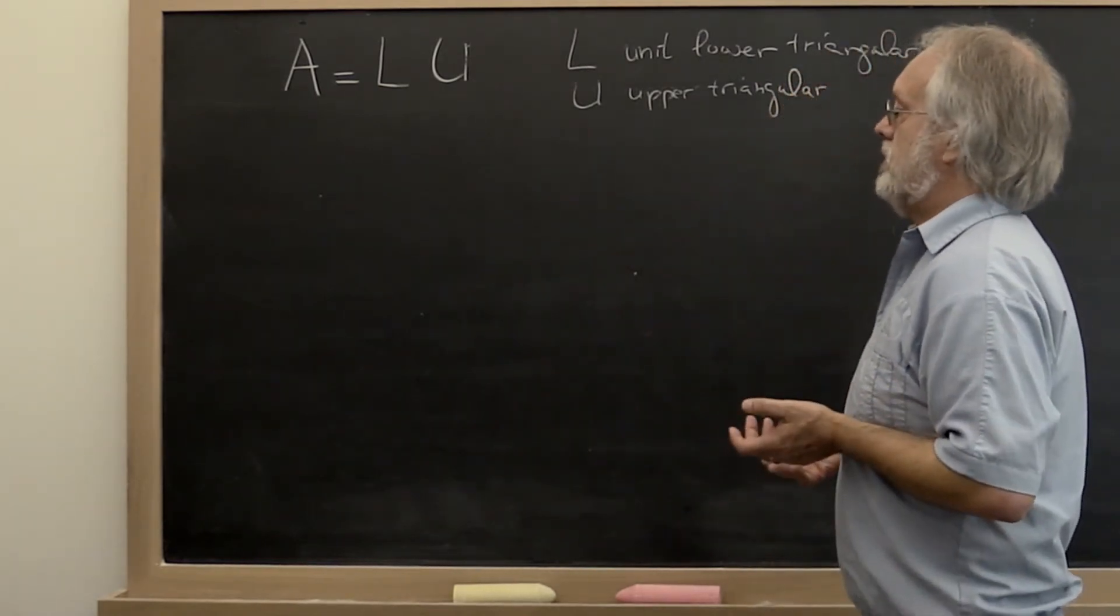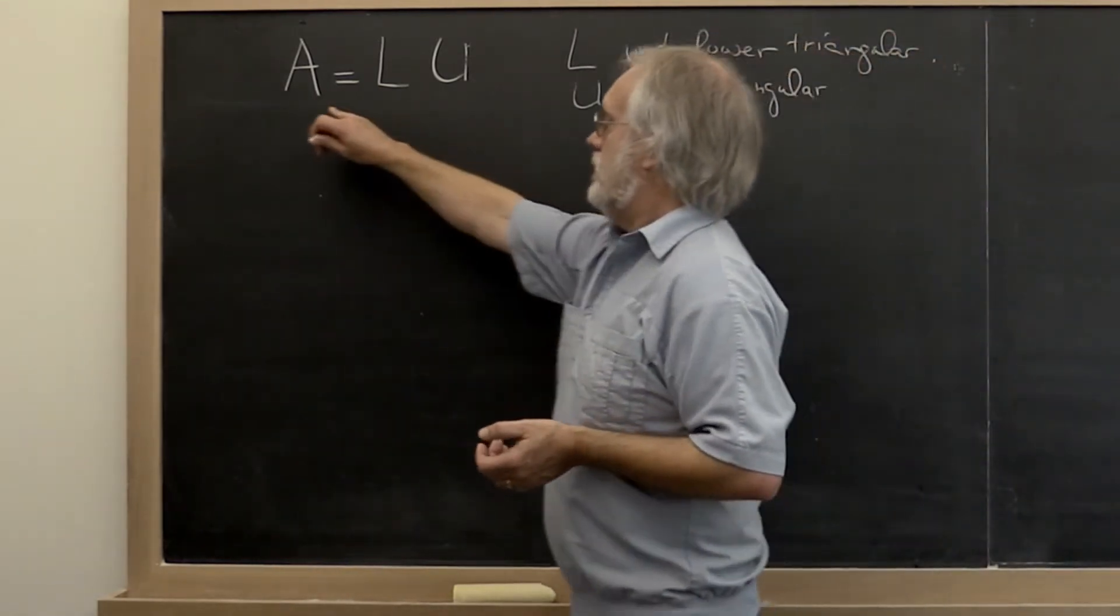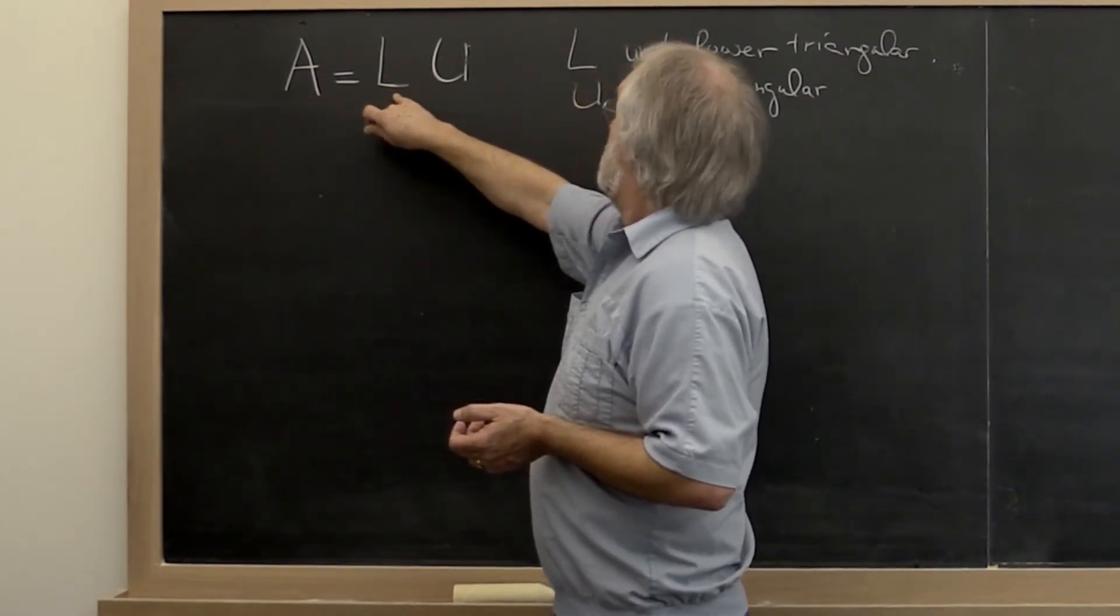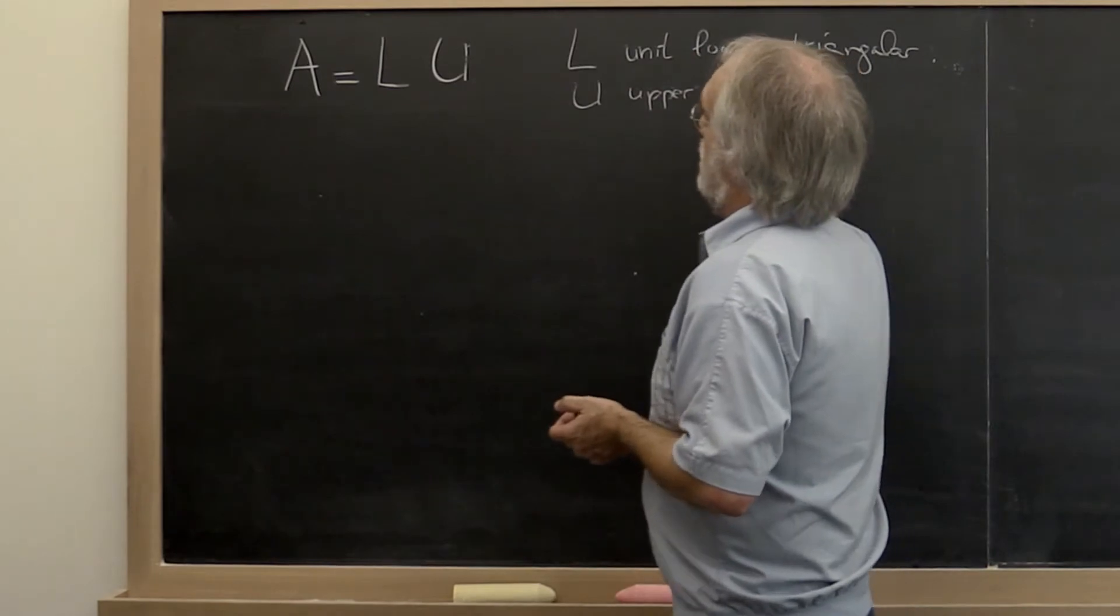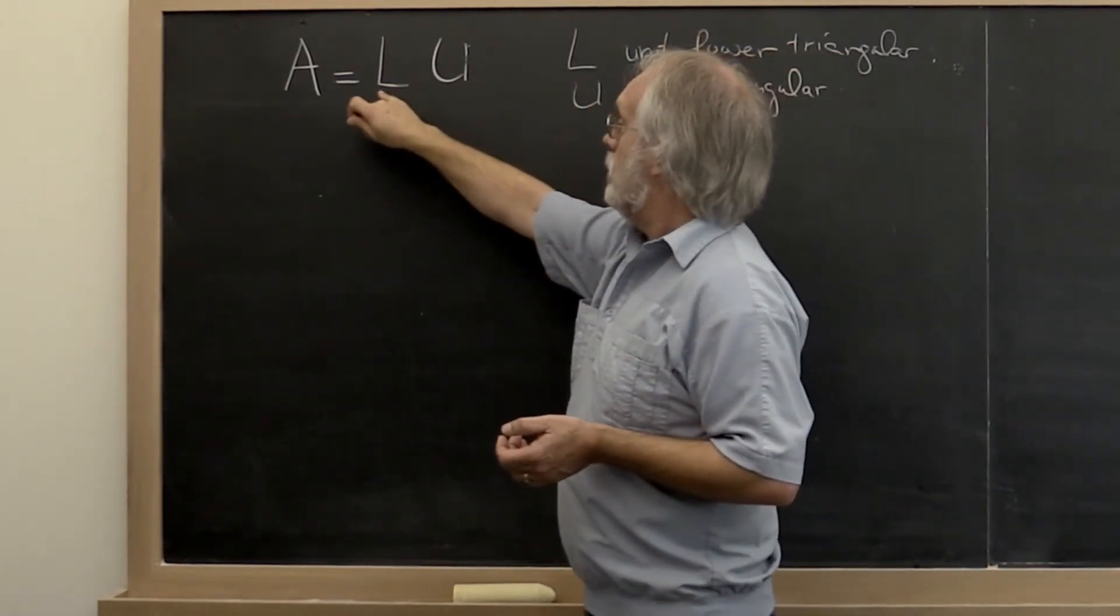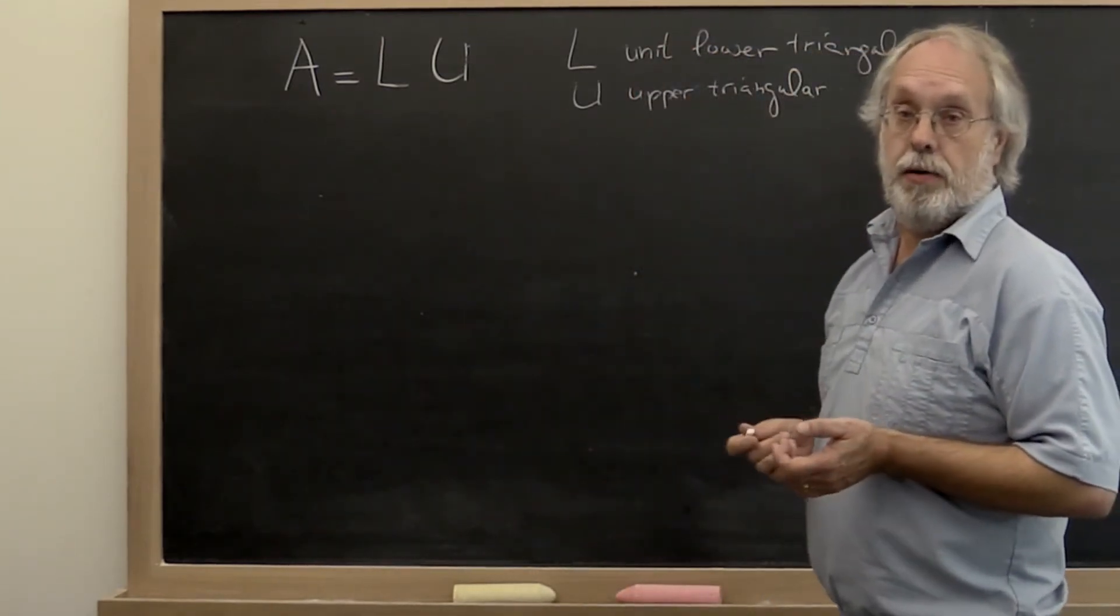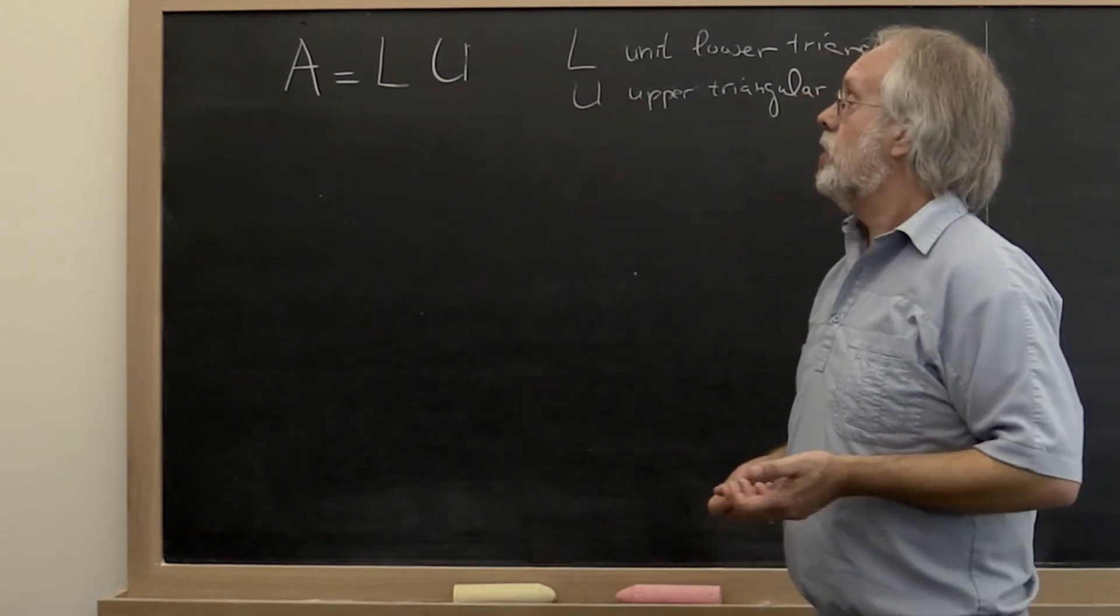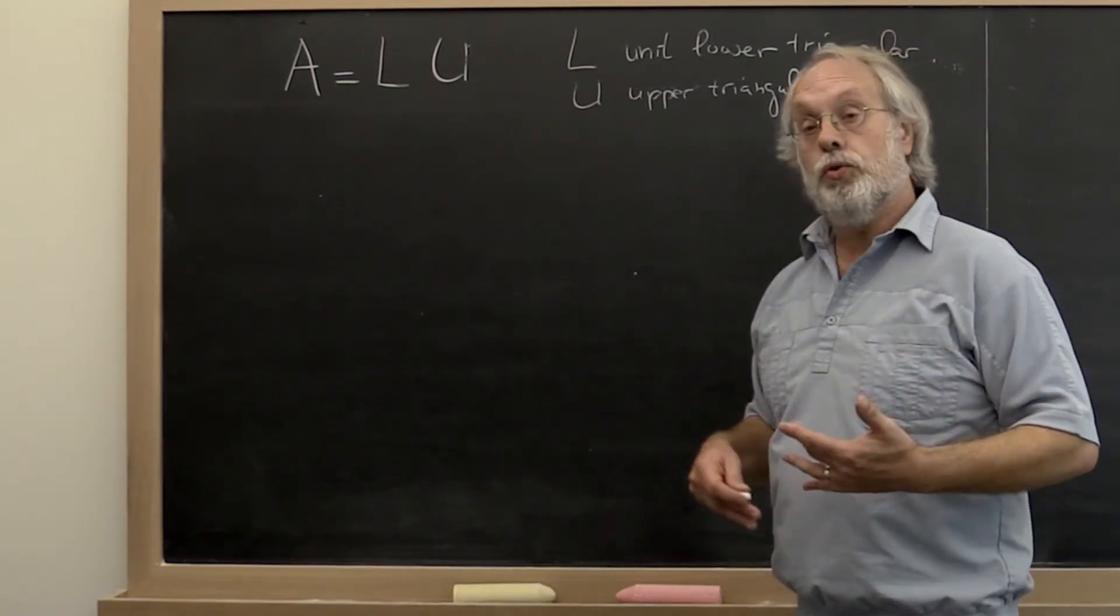So what is the LU factorization? The LU factorization is a matrix L that is unit lower triangular and an upper triangular matrix U, such that if you multiply them together, you get the matrix A back. We call that the LU factorization of A, or the LU decomposition.